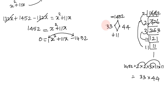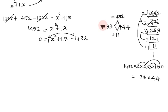We split the middle term 11x into minus 33x plus 44x. So the equation becomes x squared minus 33x plus 44x minus 1452 equals 0, giving us the factored form with the correct signs since 44 minus 33 is 11.